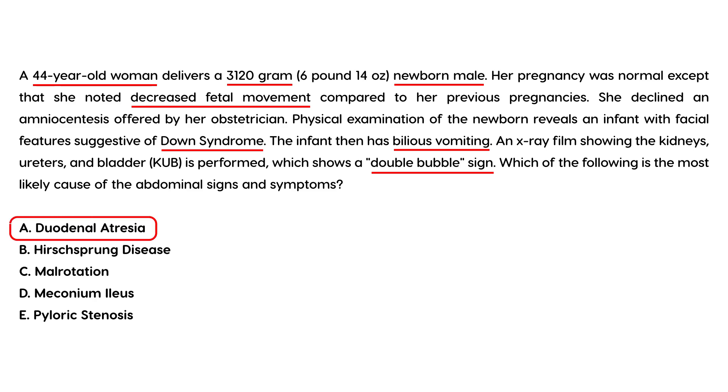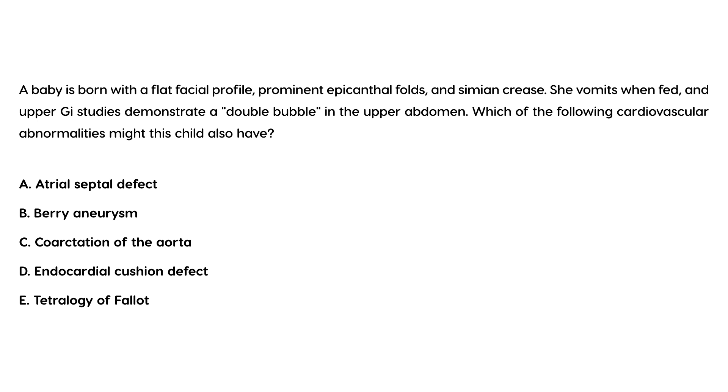Next one: a baby born with a flat facial profile, prominent epicanthal folds, and simian crease. She vomits when she feeds. Upper GI studies demonstrate a double bubble in the upper abdomen. Which of the following cardiovascular abnormalities might this child also have?